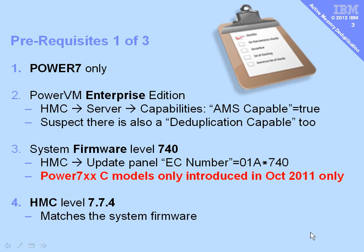Let's have a look at the prerequisites quickly. First of all, it has to be a Power 7 machine — Power 6 is not going to work. We also have to have PowerVM Enterprise Edition; you can quickly check that on the HMC by clicking on the server and looking at the capabilities. We also need firmware 740 or above. Currently this is only available in the Power 7 C models, because C is the last character of the model name. These appeared in October 2011 onwards, and they come with Gen 2 PCIe adapters, updated system planers, and this firmware. To match that firmware, you need your HMC at 7.7.4.